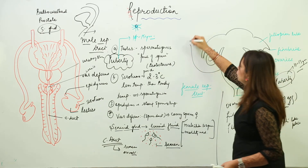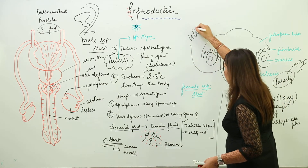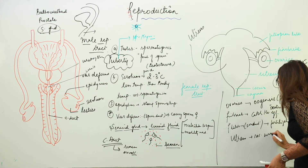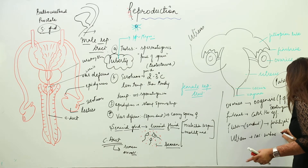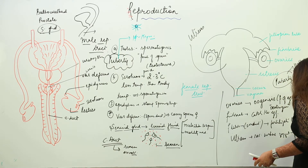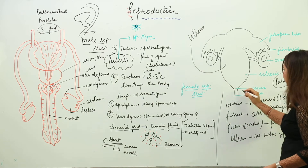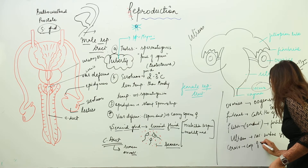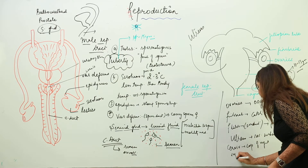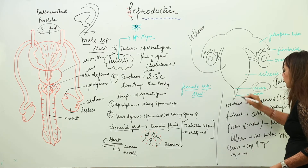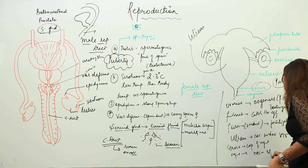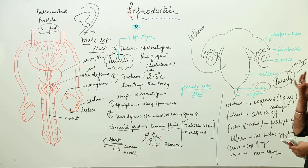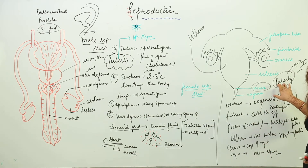The sac-like structure connected to the fallopian tube is called the uterus — this is where the baby develops, where the zygote transforms into a fetus. There is also the cervix, which is the cap of the vagina, and the vagina is the outer part which receives sperms.